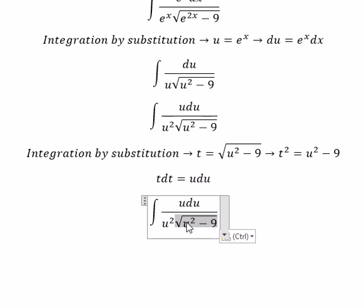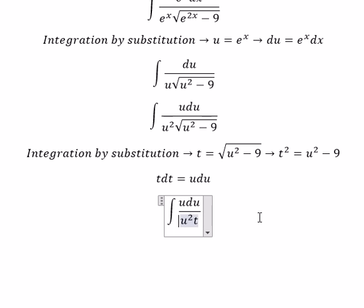So the square root we change for t. u square, we put negative nine, go to the left and you get t square plus nine. u du we change for t dt.